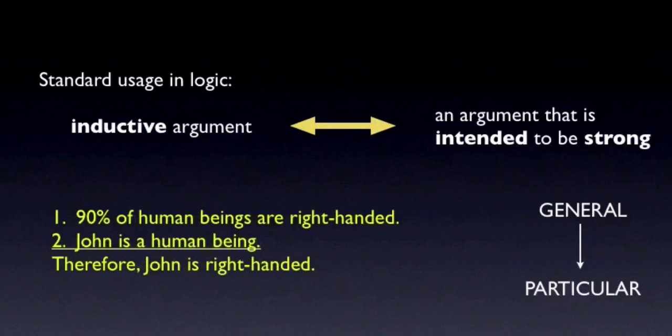Here's a second example that illustrates the difference. 90% of human beings are right-handed, John is a human being, therefore John is right-handed. Notice that the main premise is a general claim, while the conclusion is a claim about a particular person. On the standard science definition, this isn't an inductive argument, since it's moving from the general to the particular, rather than from the particular to the general. But on the logical definition of induction, this argument does count, since the argument is intended to be strong, not valid.